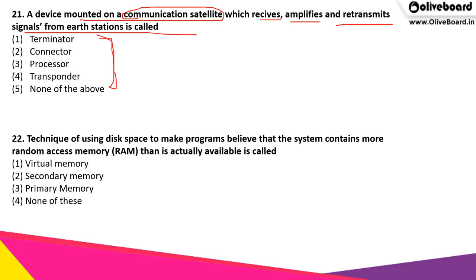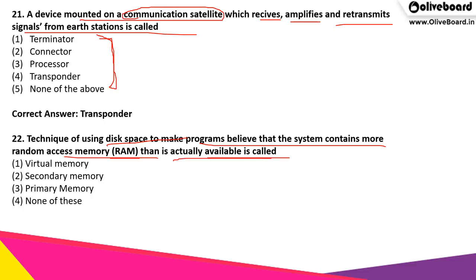The technique of using disk space to make programs believe that the system contains more random access memory than is actually available is called what? It is sort of a temporary memory that we try to create to show that RAM contains more memory. The correct answer is option 1, that is virtual memory.